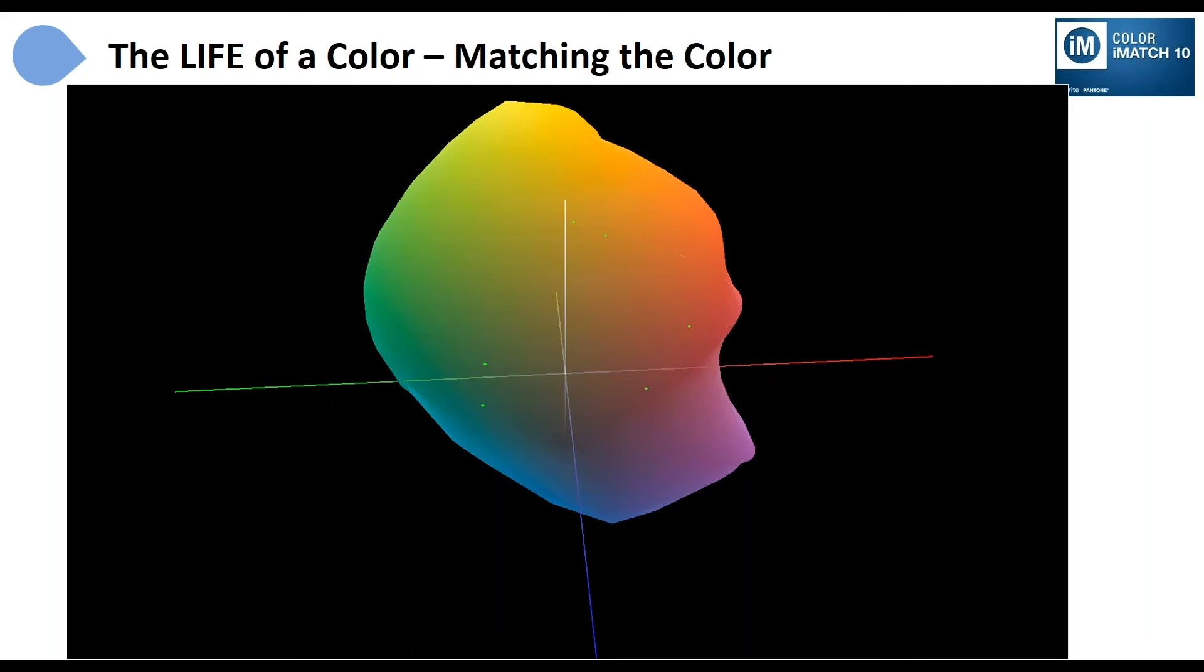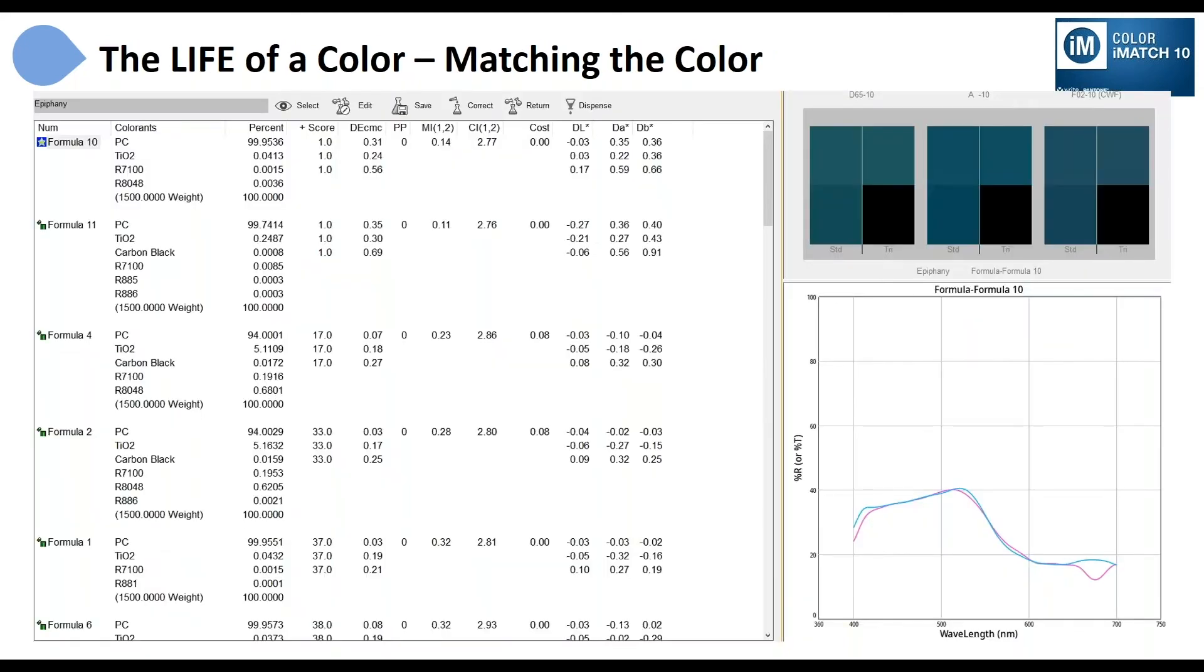So knowing that I can do that, I'm now going to go ahead and formulate my Epiphany color. And when I do that, the color match software generates for me a number of formulas, and I have them. You'll see there's a formula number listed on the left hand side, formula number 10 at the top, and then various other formulas. Their numbers are just numerically generated as it calculates them. The number itself just means what order it was calculated. The order they're sorted in right now is based on some scoring mechanisms that are going on which are considering things like color difference under three different illuminants, metamerism, even cost can be calculated. So we can look at all of these different formulas.